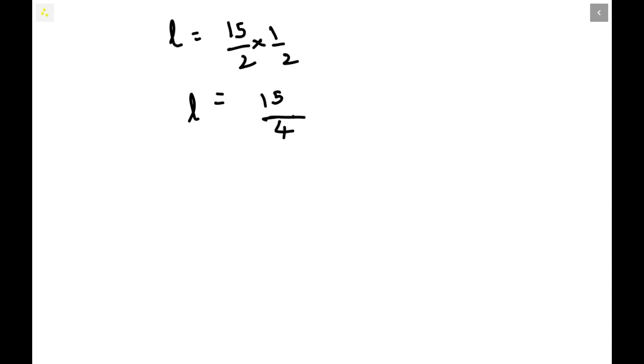Let us convert this improper fraction into mixed fraction. At this point we have to divide 15 by 4. Let us do the division. 4 threes are 12, and you get 3 as the quotient, so L equals 3 3/4.